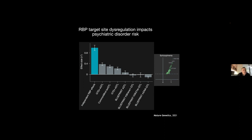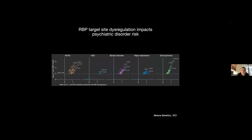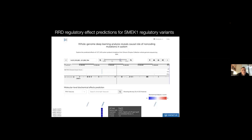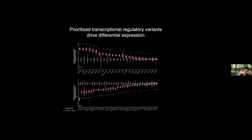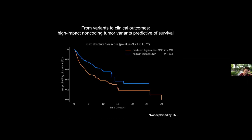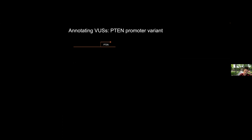There is one question from the chat. The question is: can you please comment on the deep learning architecture design? Is there any special consideration to improve prediction accuracy? It's a CNN in these cases. We've been looking at transformers. Let me pull up the architecture slide.